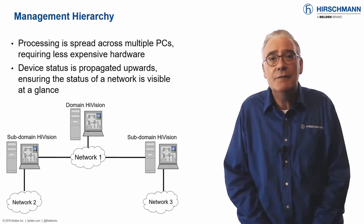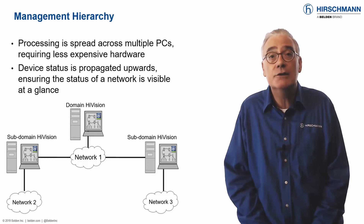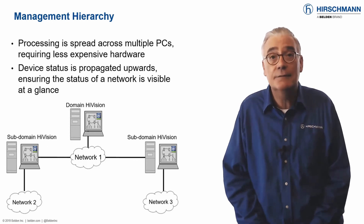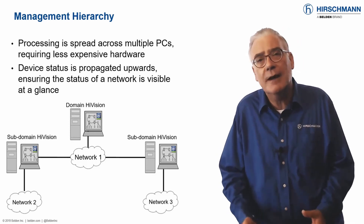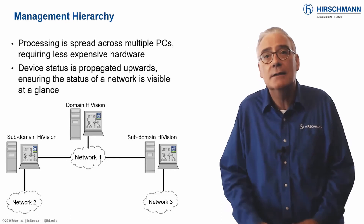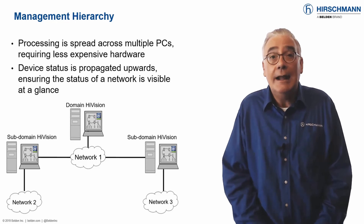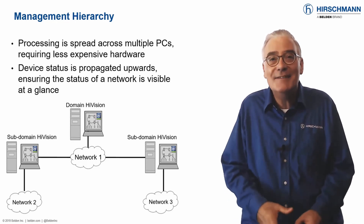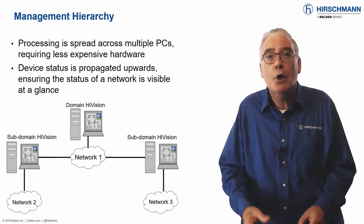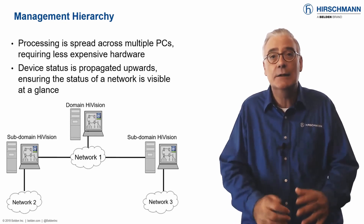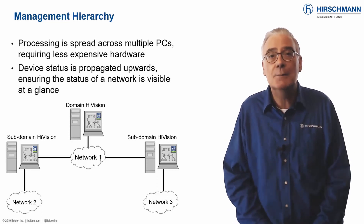Industrial HiVision can use a domain server to supervise the status of subdomain servers, which in turn supervise networks. This provides you with a highly scalable solution. And to make administration even simpler, all licenses can be held on the domain server and leased to the subdomain servers.